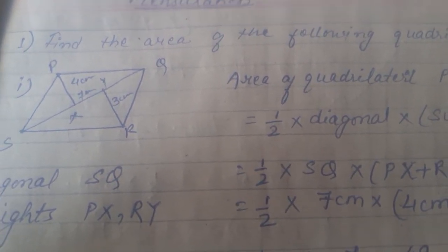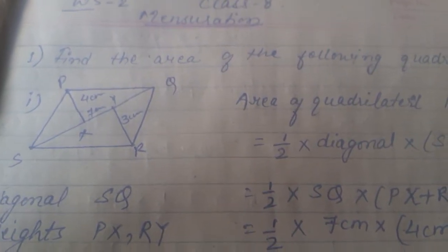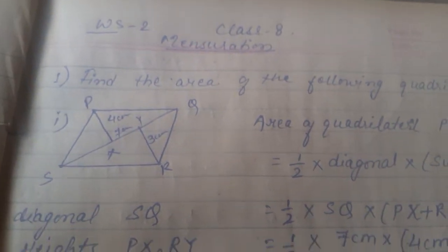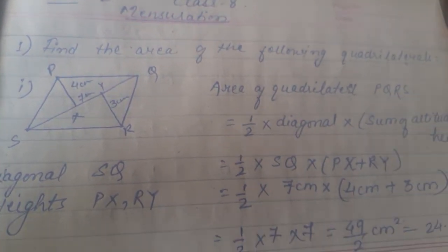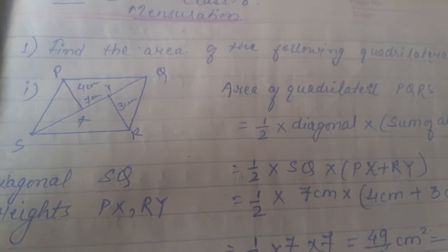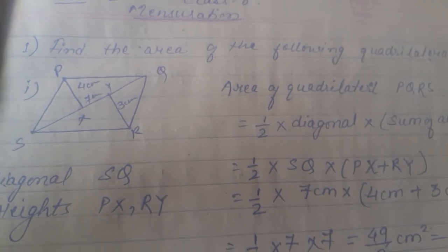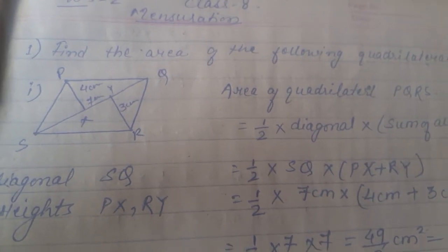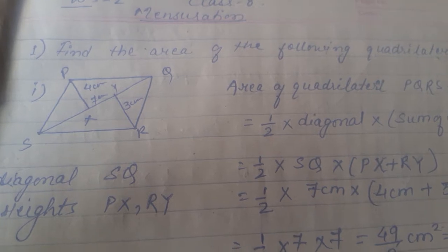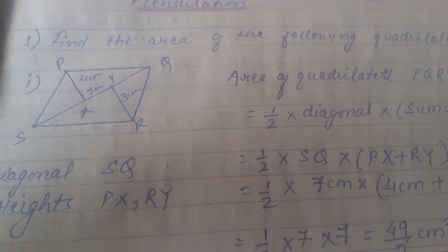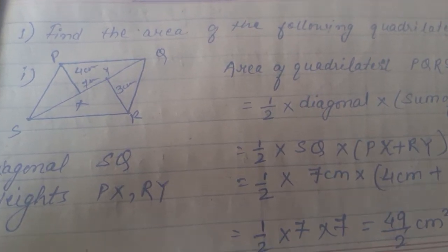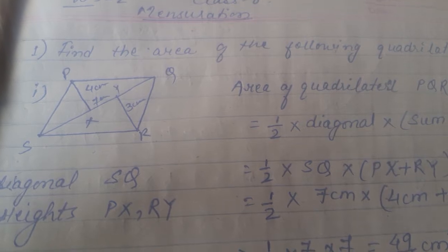A polygon can have 3, 4, 5, 6, 7, 8, or n number of sides. A quadrilateral means a 4-sided figure — a 4-sided polygon is known as a quadrilateral. It can be a rhombus or a parallelogram. But when we talk about a general quadrilateral, we cannot use any specific property because no sides need to be equal.